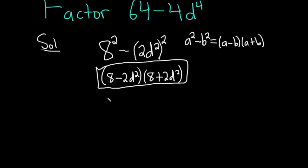So, if you wanted to go further, you could write this piece as the difference of squares. You can write this as the square root of 8 squared minus the square root of 2 times d, and then all of this is squared. And you can check that.